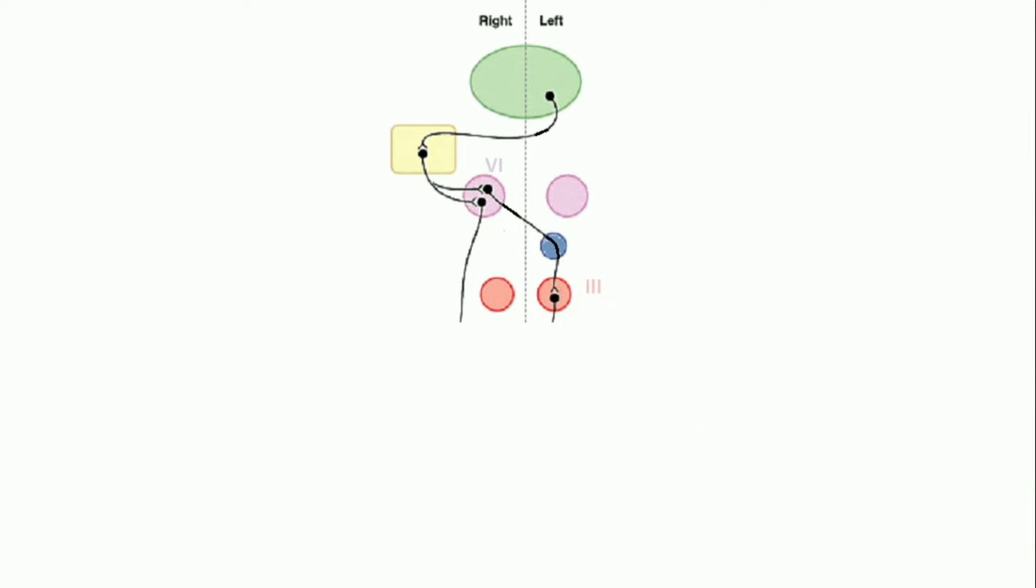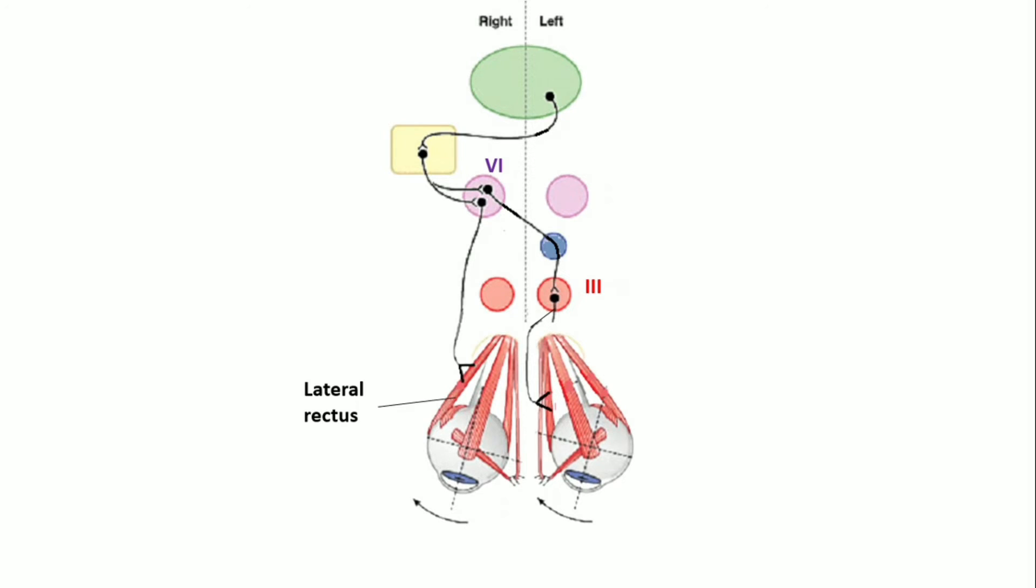The abducent nucleus controls the lateral rectus while the oculomotor nucleus controls the medial rectus. So, the net effect of activation of the left frontal eye field is to move both eyes to the right.